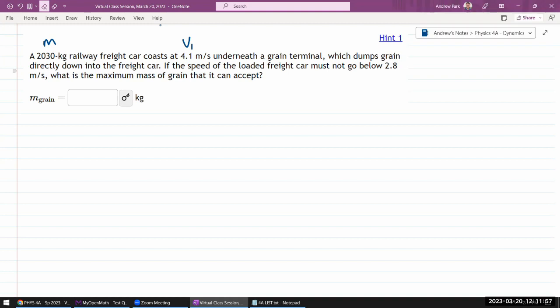which dumps the grain directly down into the freight car. Okay, so let me just make sure I understand, there's some car that's moving with some speed. Let me label this M1 actually, because I feel like there might be another mass. Oh yeah, there's another mass.